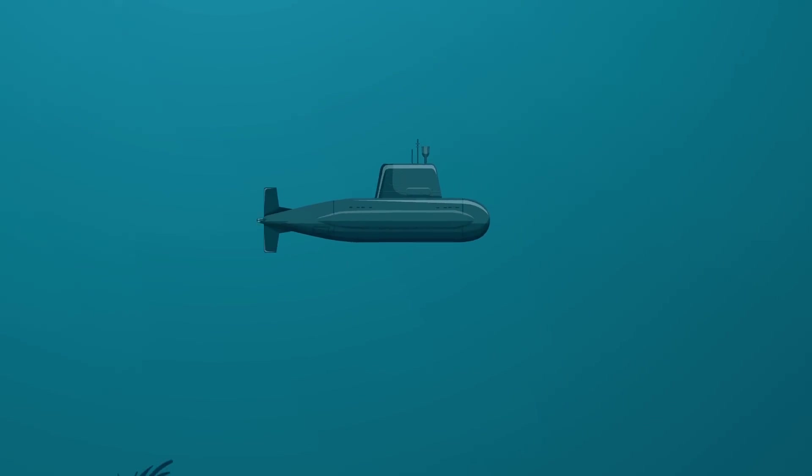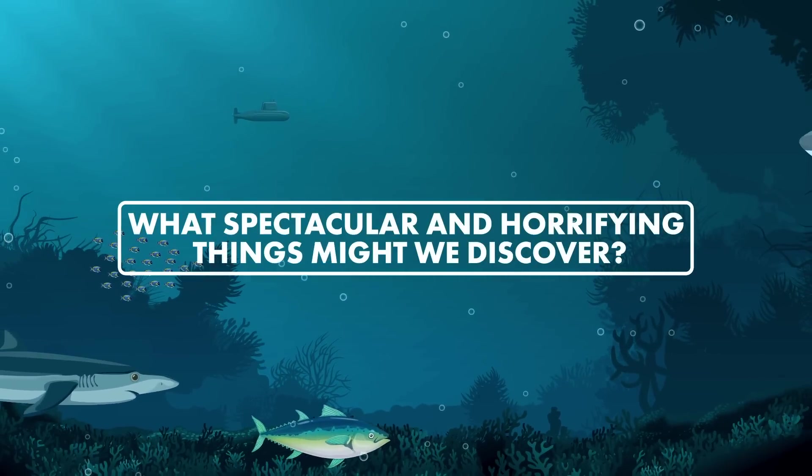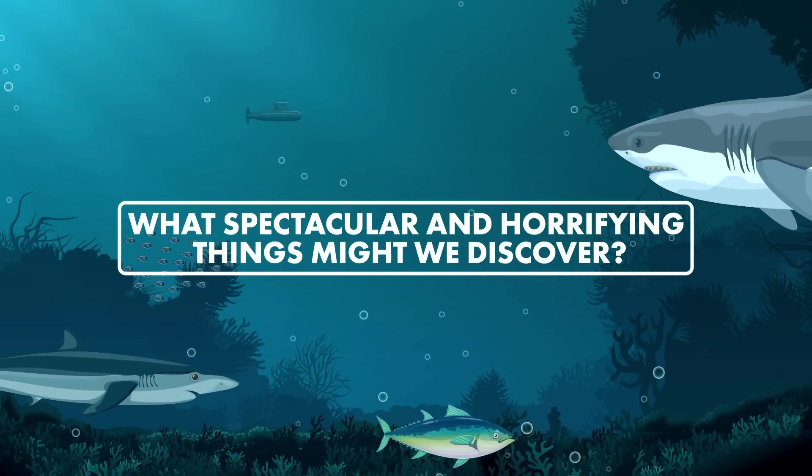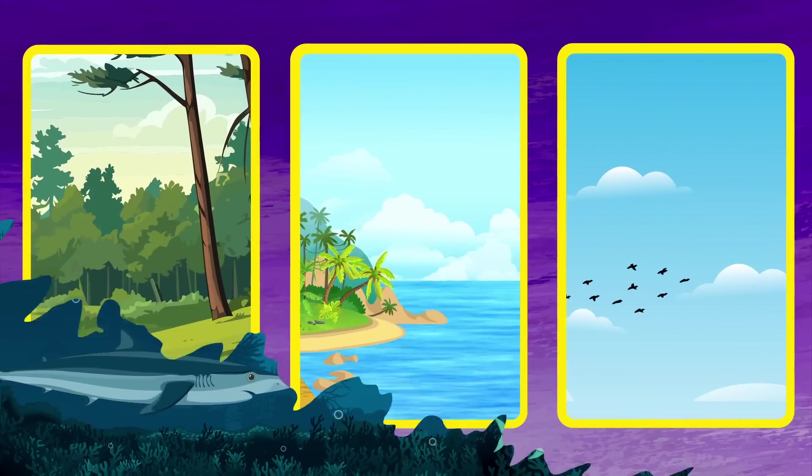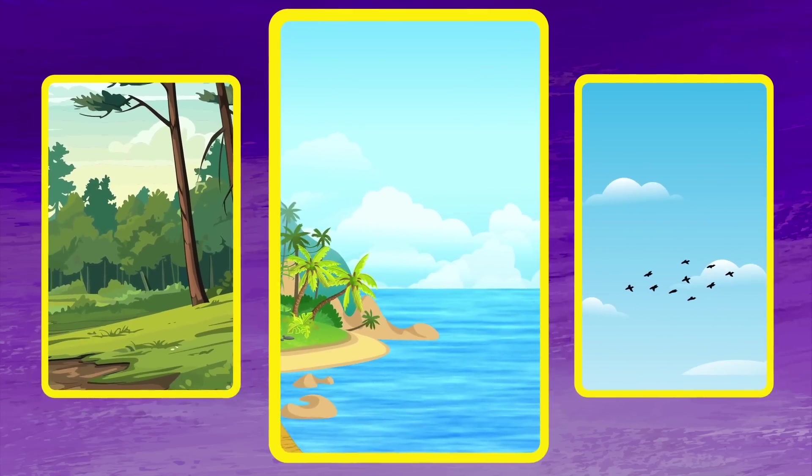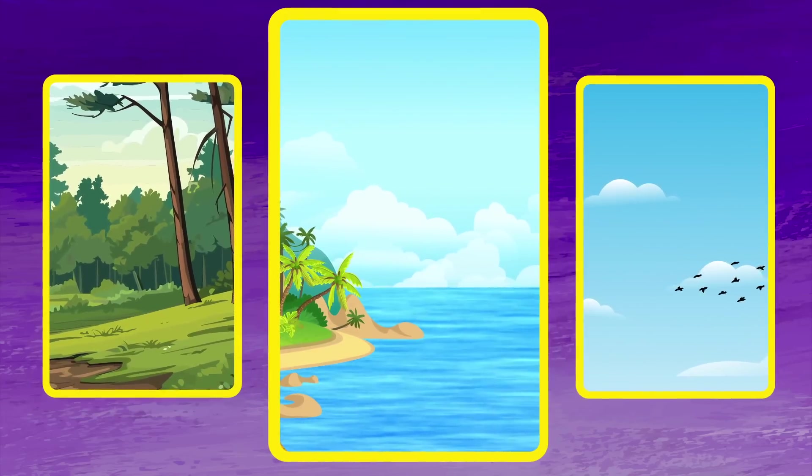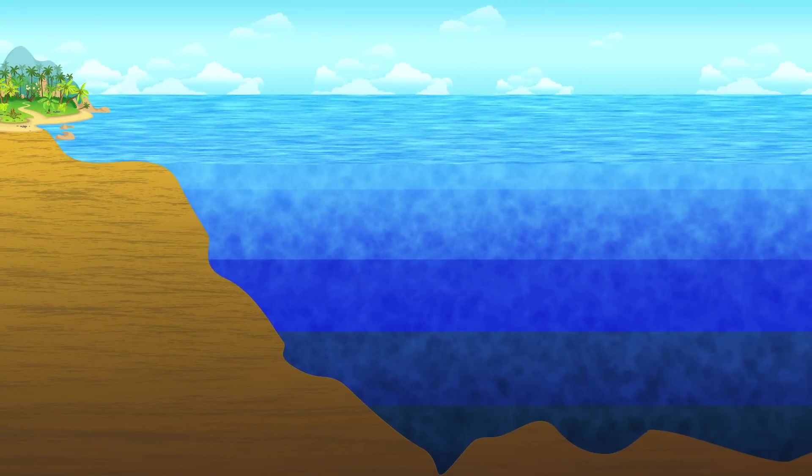If we peered into the most poorly understood environment on Earth, what spectacular and horrifying things might we discover? The ocean is distinct from many habitats because its broad regions are divided vertically by depth, creating what's known as the water column.